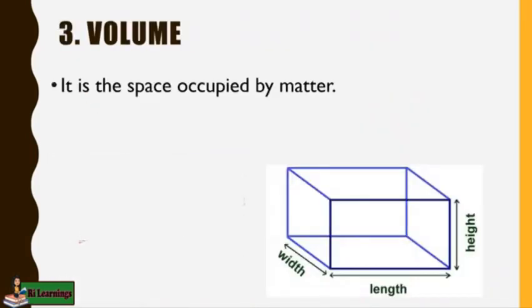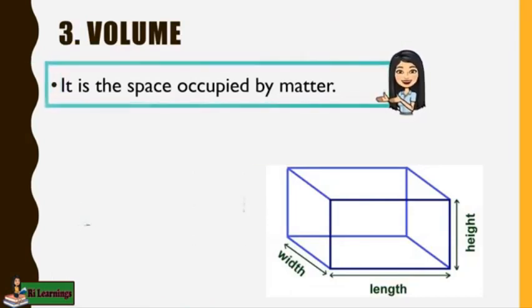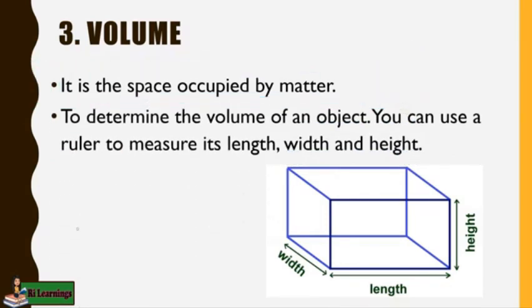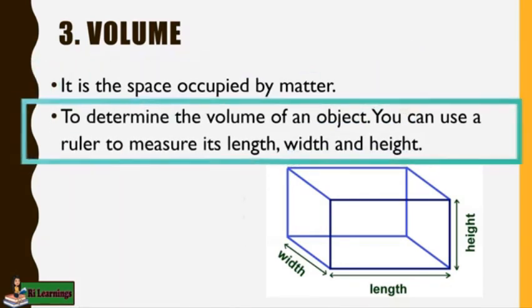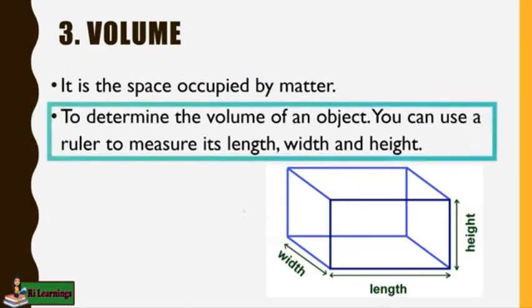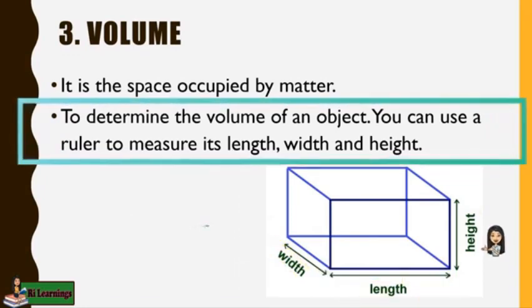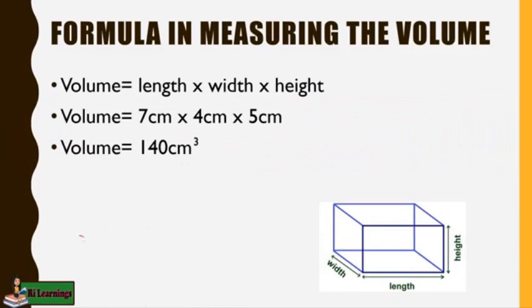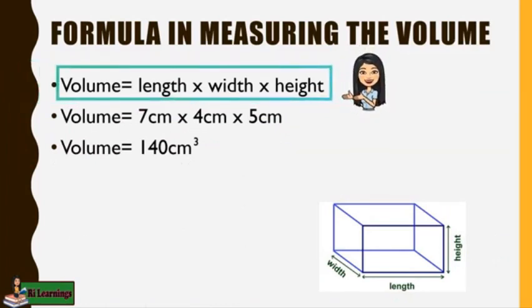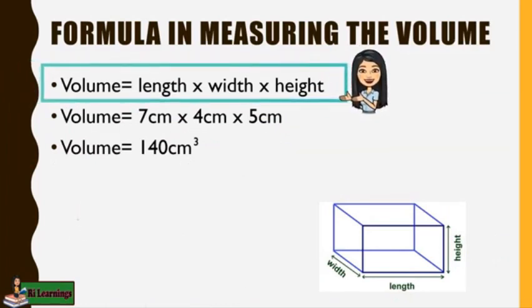The third property of matter is volume. Volume is the space occupied by matter. To determine the volume of an object, you can use a ruler to measure its length, width, and height. The formula in measuring the volume is length times width times height.